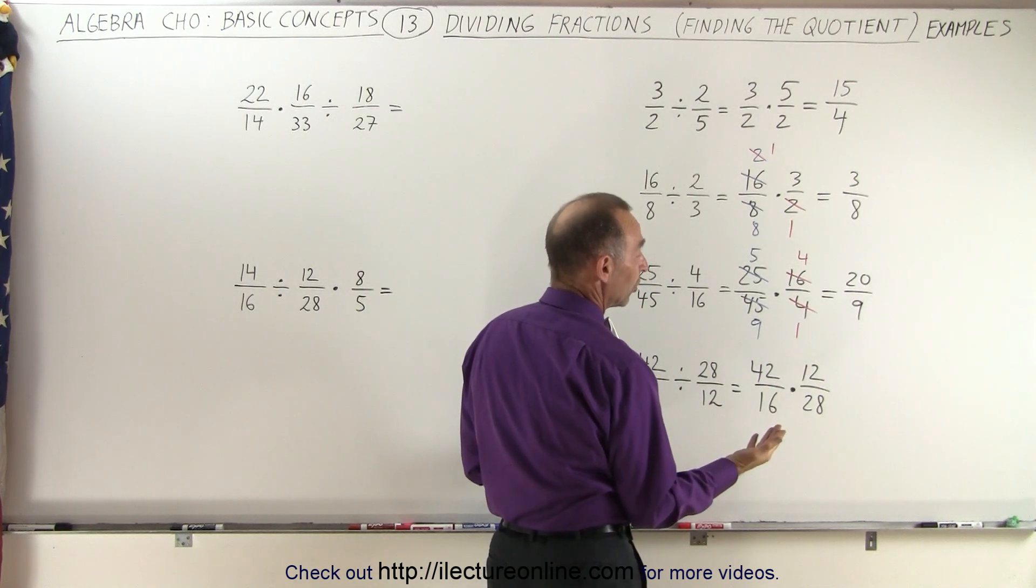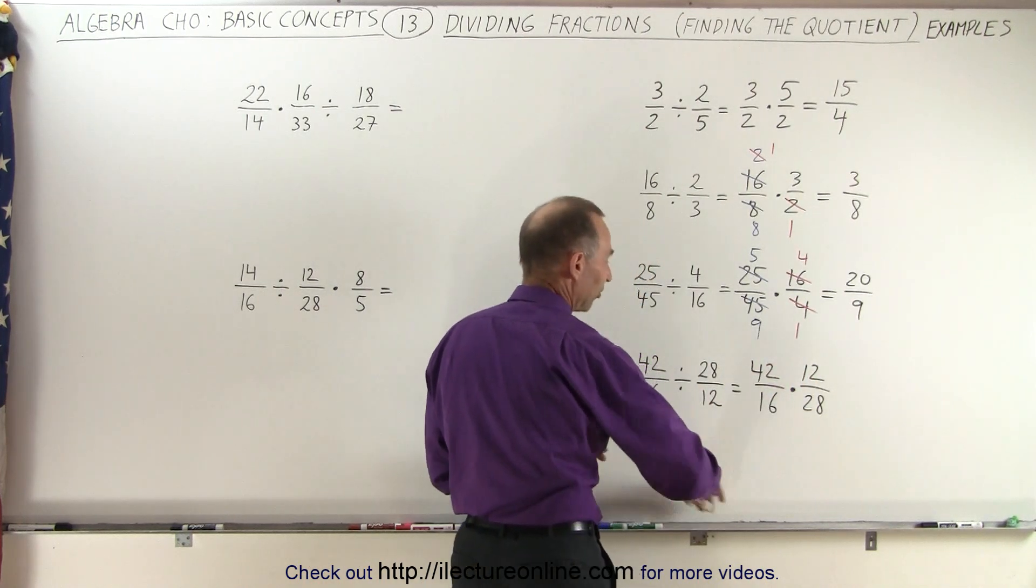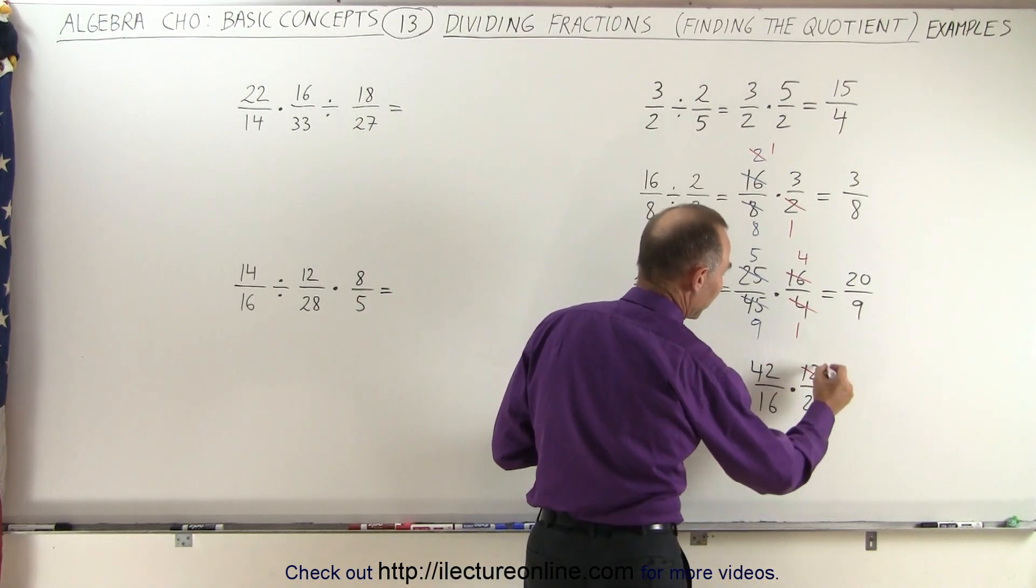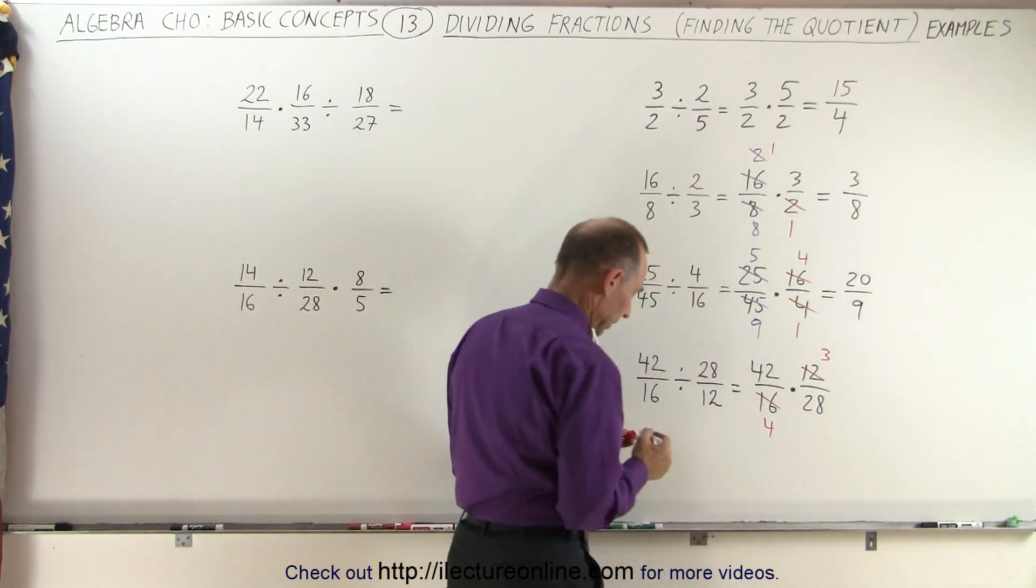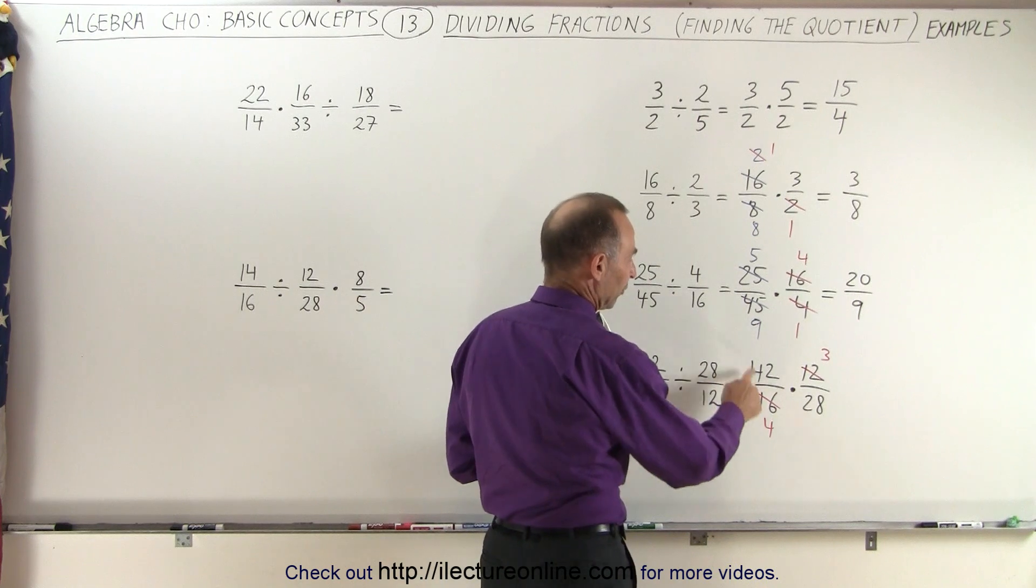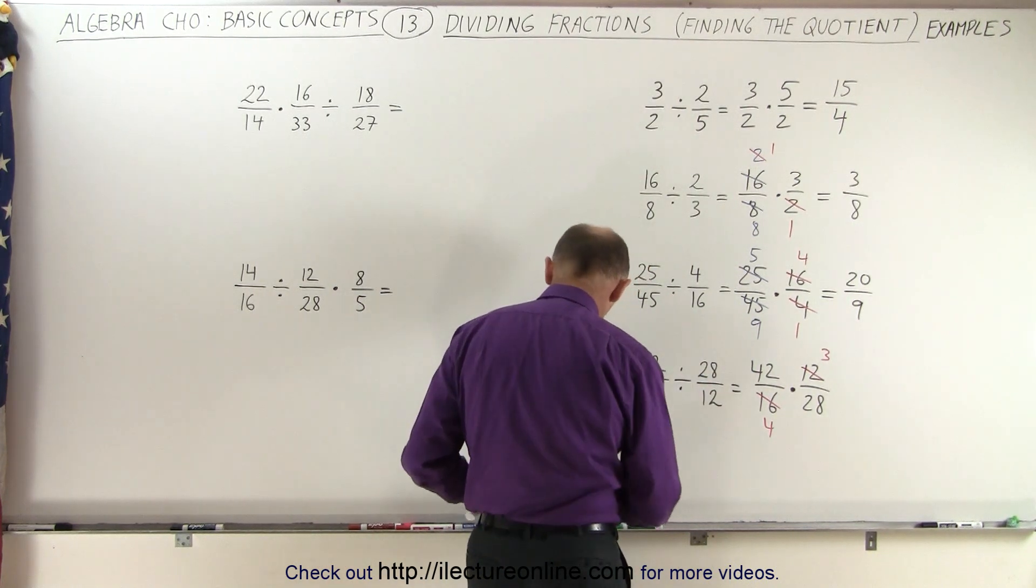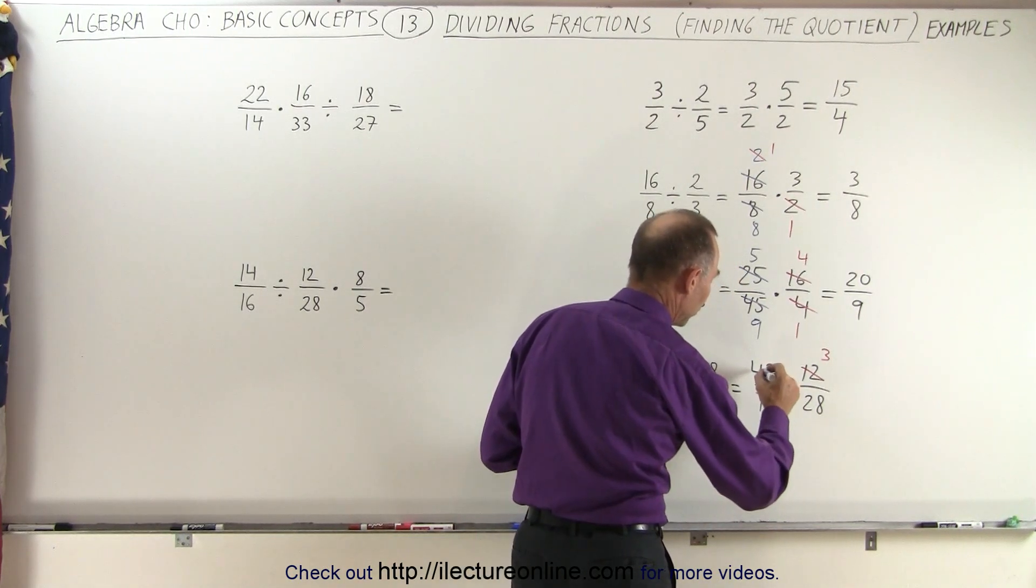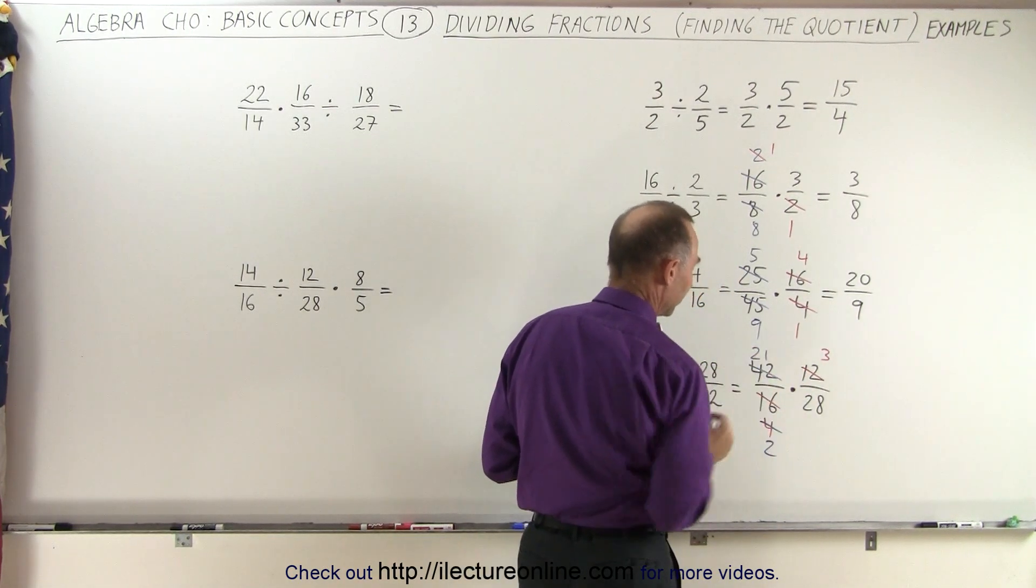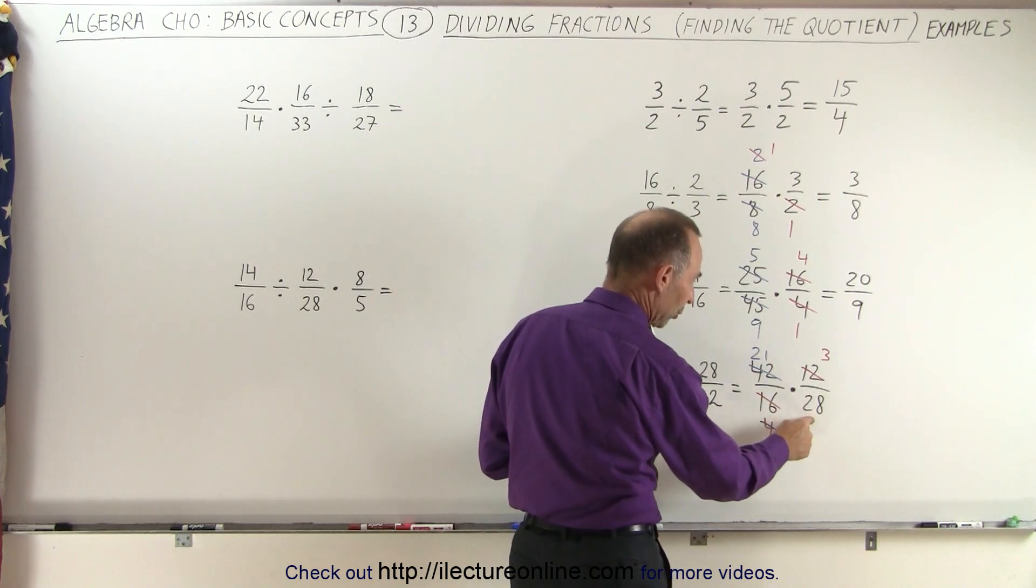But 12 and 16, how about those? You can divide 12 by 4, you can divide 16 by 4. So let's start with that. 12 divided by 4 is 3, 16 divided by 4 is 4. Does 4 and 42, can you simplify that? Well, we can divide both sides, both the top and the bottom by 2. So 4 divided by 2 is 2, 42 divided by 2 is 21.